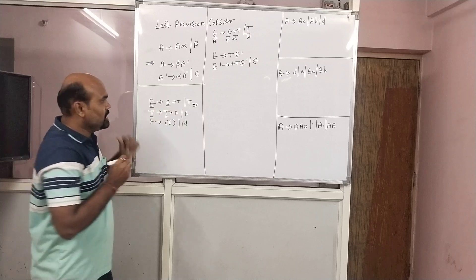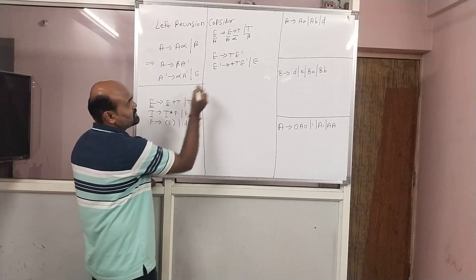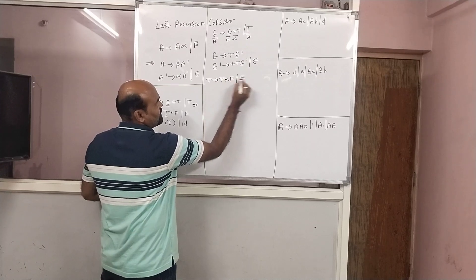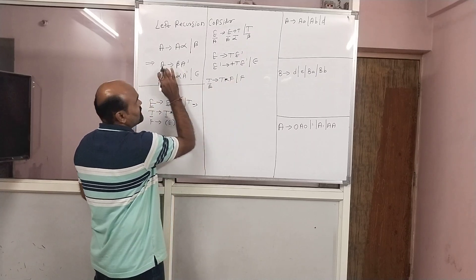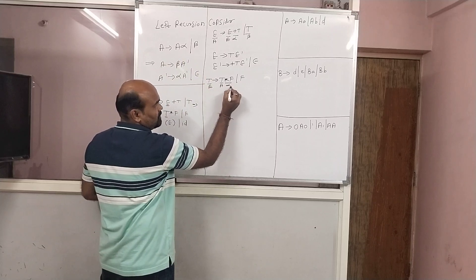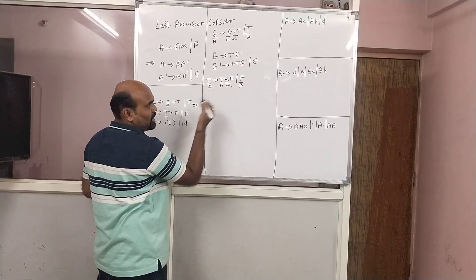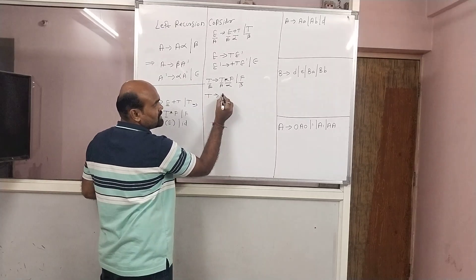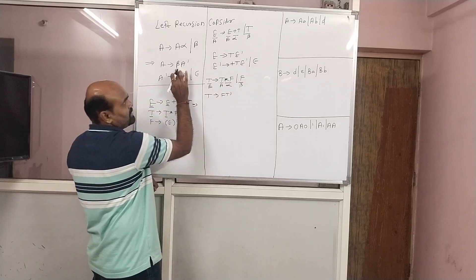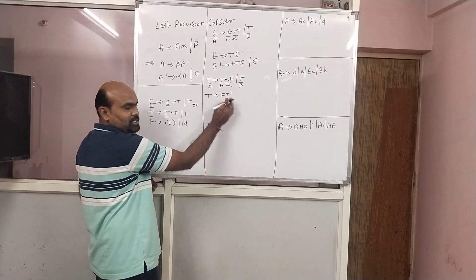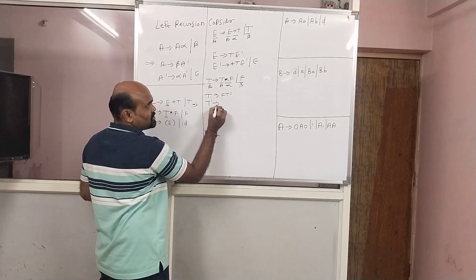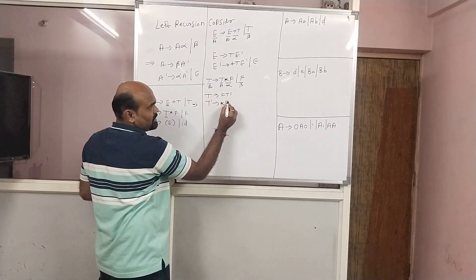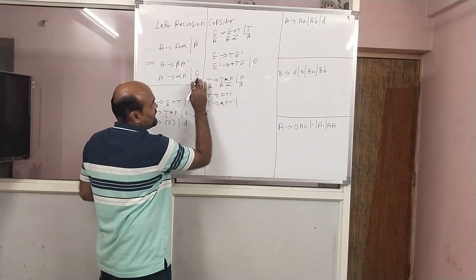Now consider the second one: T gives T star F slash F. Here T is our A, this T is also A, star F is alpha, and F is beta. How to solve it? T gives F T-dash, and T-dash gives star F T-dash slash epsilon.